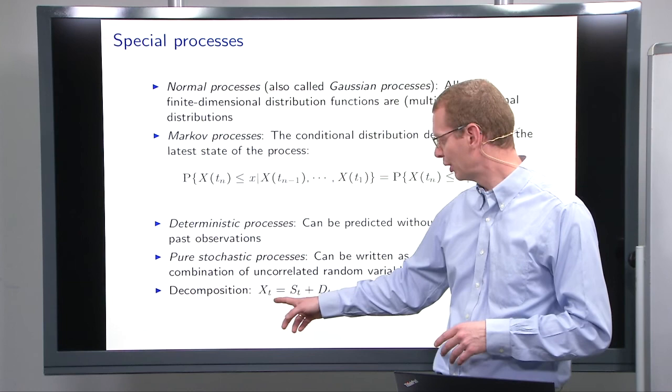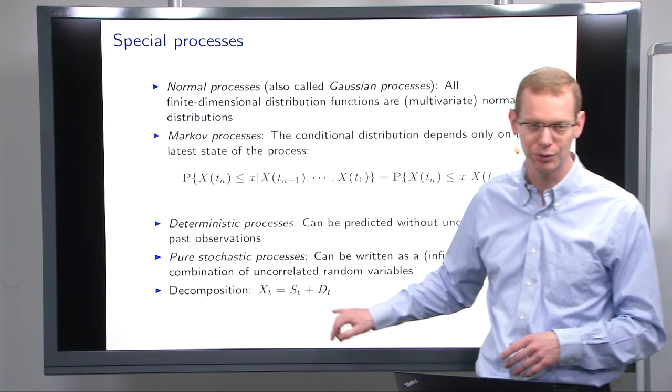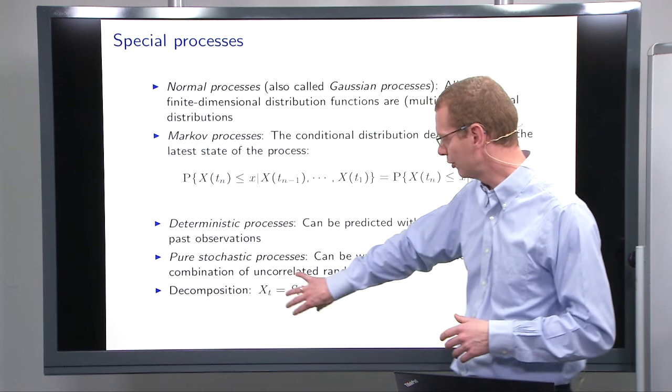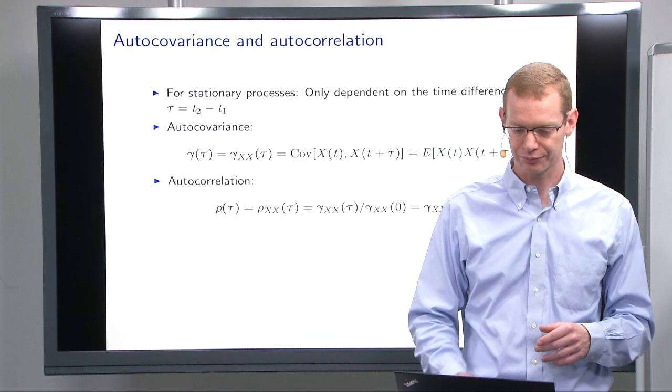But what is important is to think of whenever you observe something, it may have a stochastic component and it may have a deterministic component. And sometimes, if we know stuff about one, then it's much easier to kind of decompose the original, the problem into two parts where if one is easy, the other one typically also gets more easy.